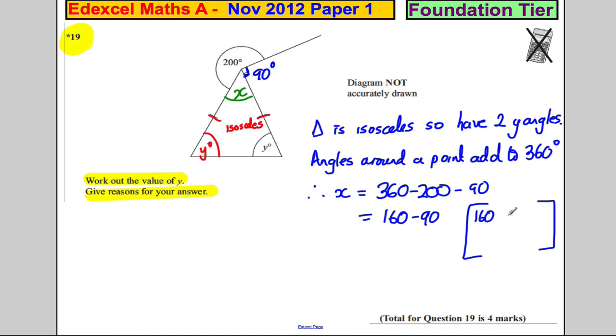160, what I would do is I'd subtract 100 in my head to get 60, and I'd add back 10 because I've taken off too many. Right, so it's obviously 70. So X is therefore equal to 70.